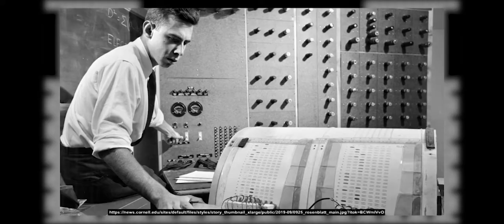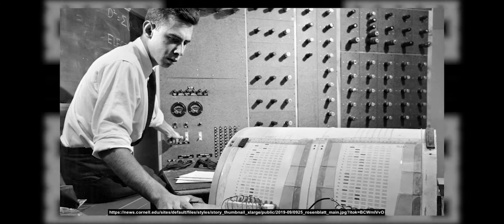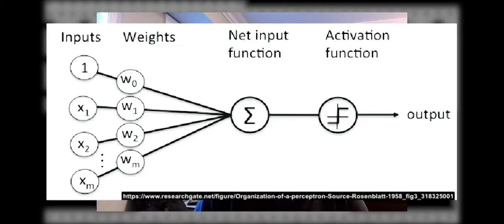Everything changed in 1958 when Frank Rosenblatt, a researcher at Cornell's Aeronautical Laboratory, made the Perceptron, which became the basis for modern neural networks.